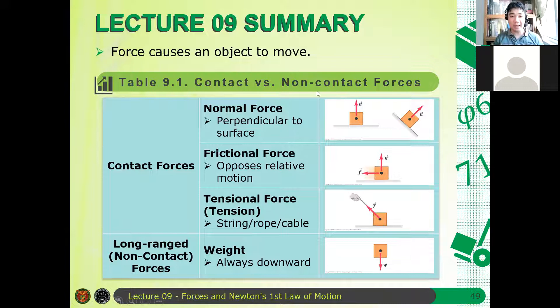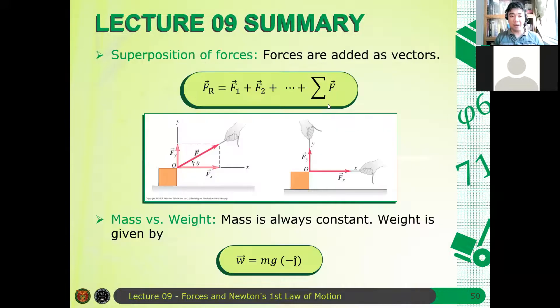We have our notion of superposition of forces and the difference between mass and weight. Mass is always constant, while weight will depend on the location where the object or particle is.